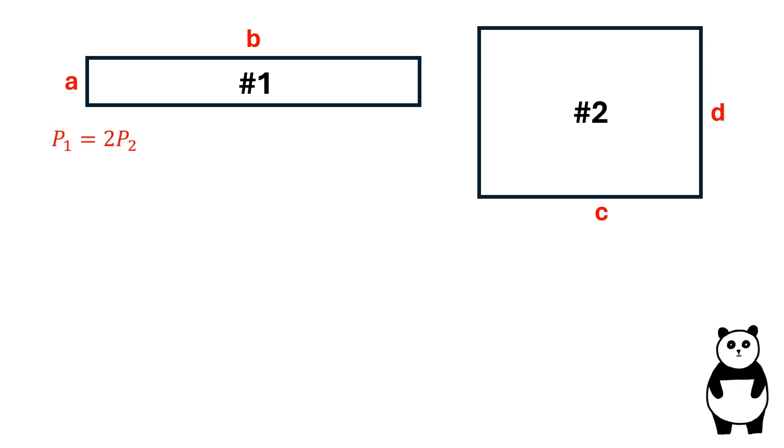Since the perimeter of the first rectangle is equal to two times the perimeter of the second rectangle, the sum of A and B is equal to two times the sum of C and D. We can rearrange this equation to solve for B.